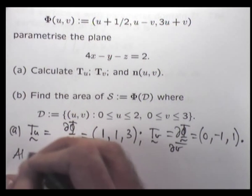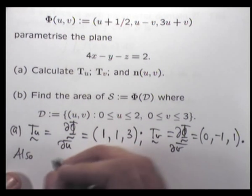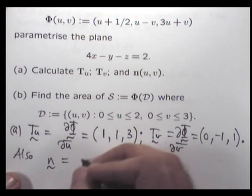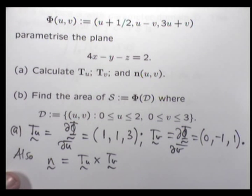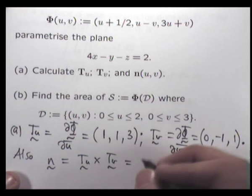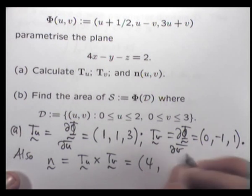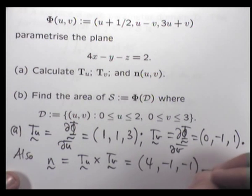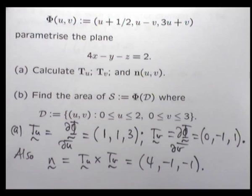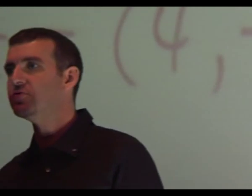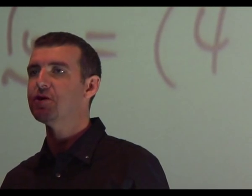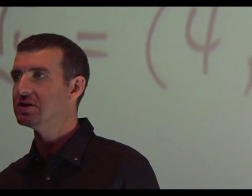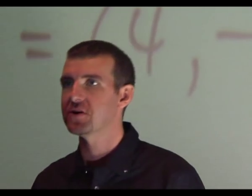To take the cross product of these two vectors — from my calculations, you should get that result. Notice that in this case, the normal vector is a constant vector. When these problems get more difficult, it's not necessarily going to be a constant vector — you'll have U's and V's floating around in it.